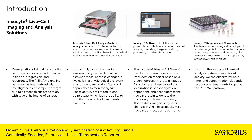The Incusite Kinase AKT green-red lentivirus reagent encodes a kinase translocation reporter based on a green fluorescent protein-tagged AKT substrate whose subcellular localization is phosphorylation-dependent, and a red fluorescent nuclear protein to denote the nuclear-cytoplasmic boundary. This enables analysis of dynamic changes in AKT kinase activity via a nuclear translocation ratio metric.